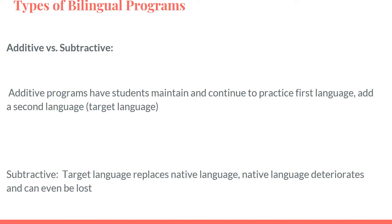A subtractive program, on the other hand, is the opposite — the target language or second language replaces the native language. In the United States, it would be English replacing students' native language, whether Spanish, Vietnamese, Mandarin, Arabic, etc. With subtractive policies, the native language deteriorates and could even be lost. Since the net amount of language is decreasing, it is considered subtractive — even though a person might develop their second language, their first language is being reduced.